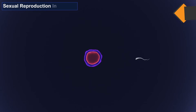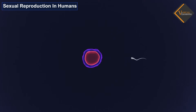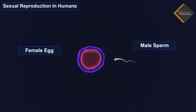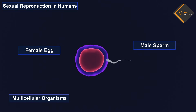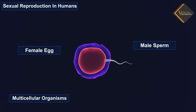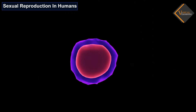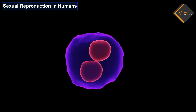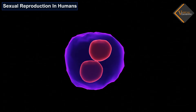Sexual reproduction is a natural way of reproduction and takes place in all multicellular organisms. This process involves two individuals to produce offspring. In this process, the male and the female gametes fuse together.